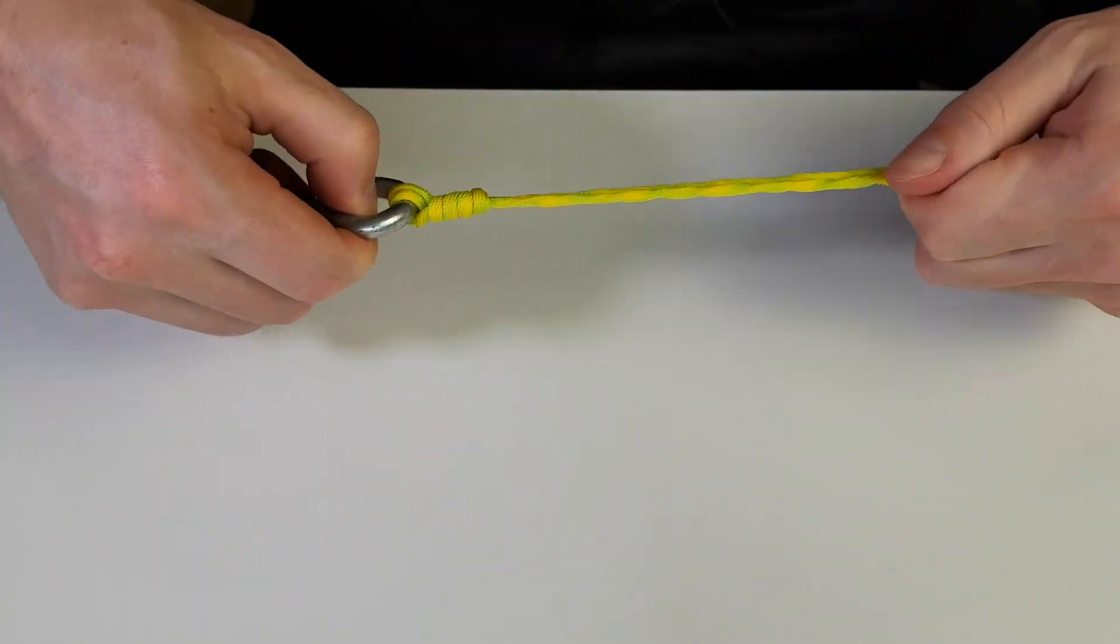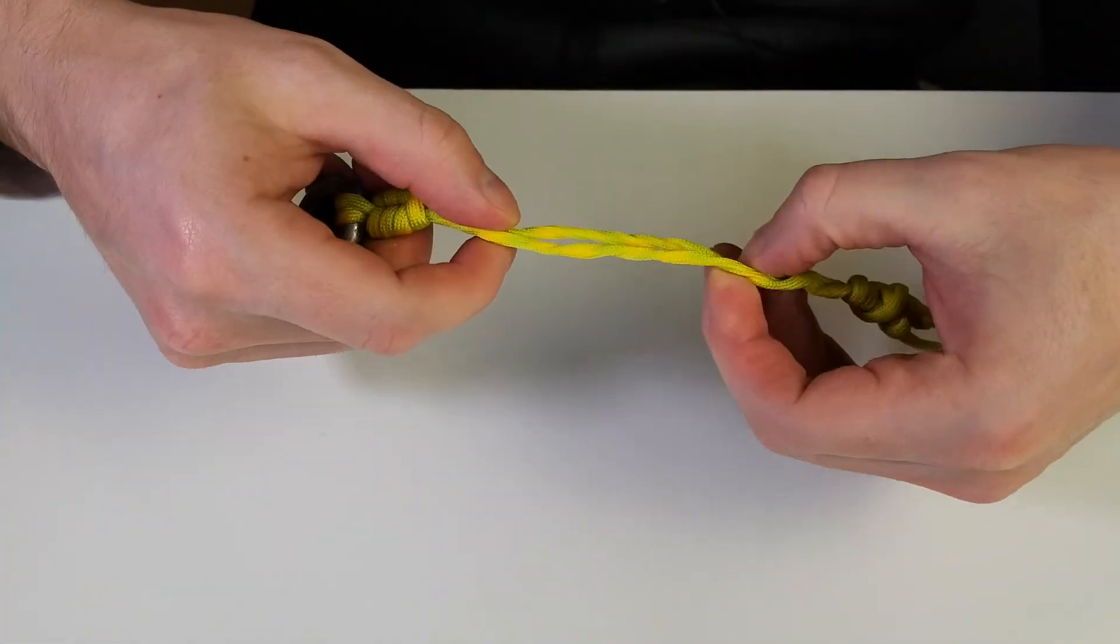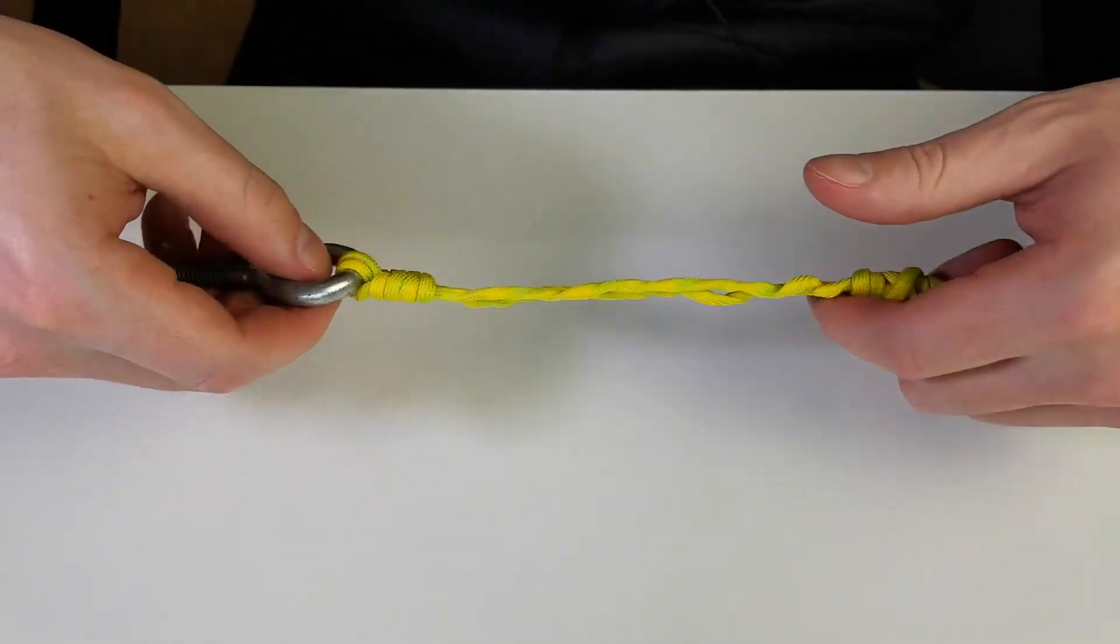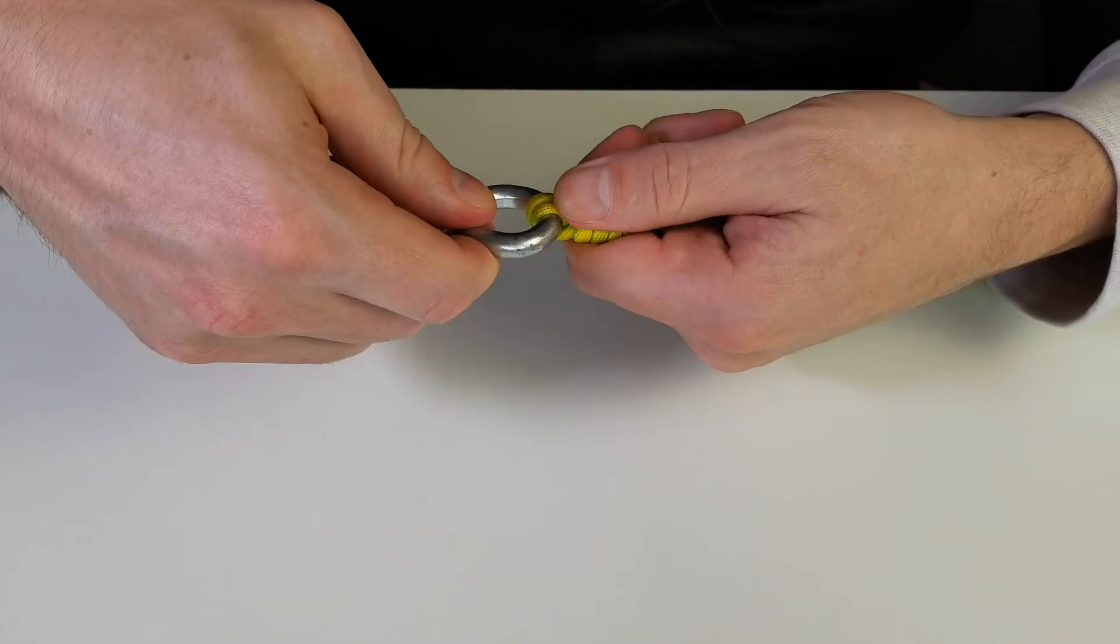Just like that, kind of working it. You probably won't have these twists here just because I'm using rope, so it's a little bit messier. But this is kind of what your knot should look like, something like that right there.